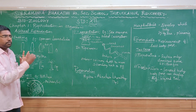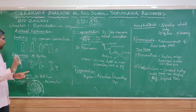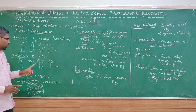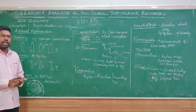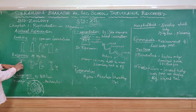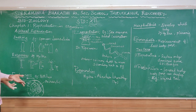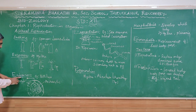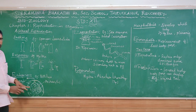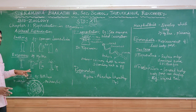There are two types of budding: the first is exogenous and the second is endogenous. Exogenous budding occurs in hydra — the bud forms on the outside of the body. Endogenous budding involves a bud forming inside the body.